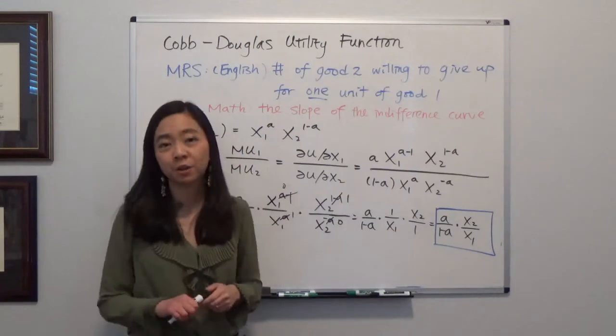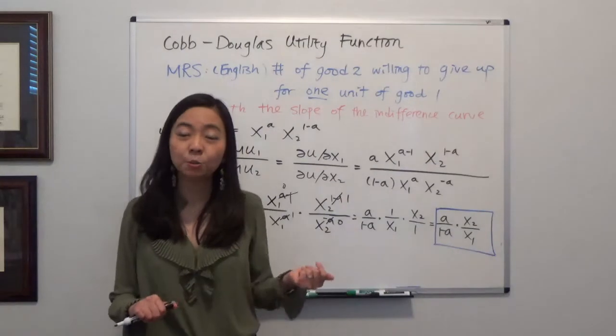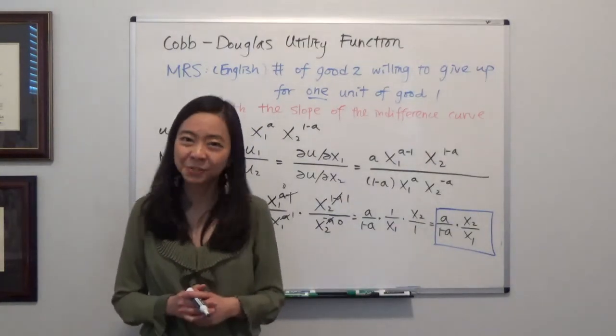And that's our marginal rate of substitution for our Cobb-Douglas utility function. I hope this helps and you feel less intimidated by Cobb-Douglas. I'll see you next time.